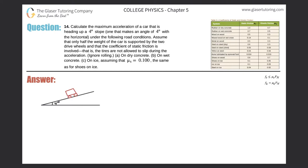Number 14. Calculate the maximum acceleration of a car that is headed up a 4-degree slope — one that makes an angle of 4 degrees with the horizontal — under the following road conditions. Assume that only half of the weight of the car is supported by the two drive wheels, and that the coefficient of static friction is involved. That is, the tires are not allowed to slip during the acceleration. Ignore any rolling. For letter A, we've got to do it on dry concrete.